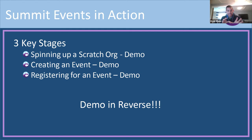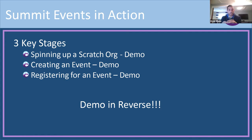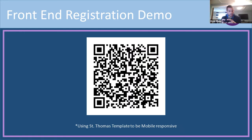There are three key stages when looking at Summit Events. First, setting up — spinning up a scratch org, which we tend to encourage for working with the unmanaged code and getting a feel for the tool. Second, how to create an event to show the functionality and how simple it is. Third, the actual registration experience. We're going to reverse that order and give you all an opportunity to experience it yourselves. If you hold up your smartphone camera to the QR code on the next slide, you'll be taken to the registration page. Note that I'm using the St. Thomas template — Summit Events lets you create custom templates for the registration flow, and we've made sure it's mobile responsive.